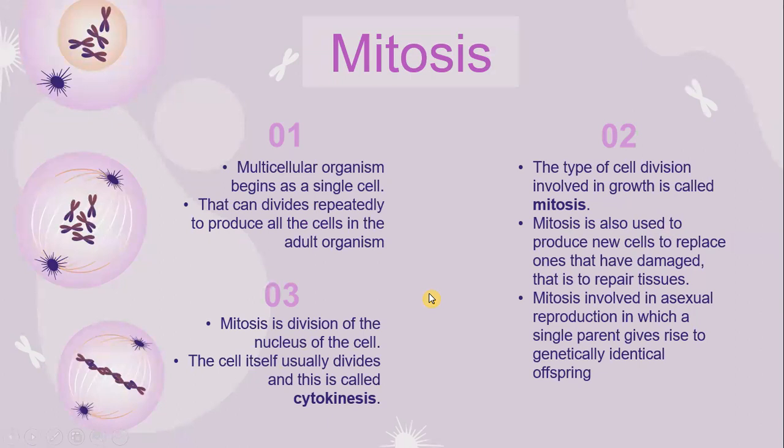Mitosis. Multicellular organisms begin as a single cell that can be divided repeatedly to produce all the cells in the adult organism. The type of cell division involved in growth is called mitosis. Mitosis is also used to produce new cells to replace ones that have been damaged — that is, to repair tissues. Mitosis is involved in asexual reproduction, in which a single parent gives rise to genetically identical offspring.